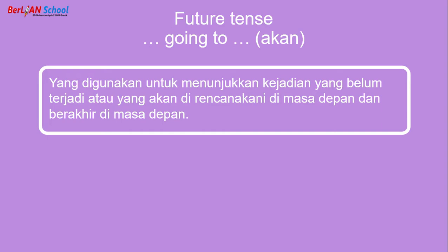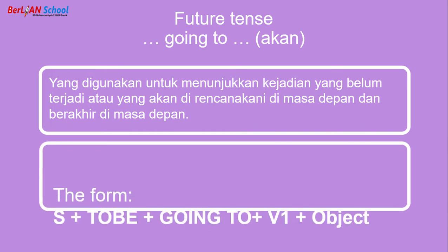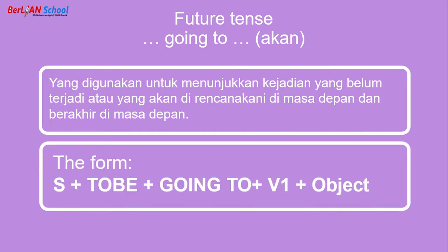The formula is: Subject + To be + Going to + Verb 1 + Object. After the subject, we use 'to be', followed by 'going to', and after 'going to' we must use the verb in its first form (base form), followed by the object.